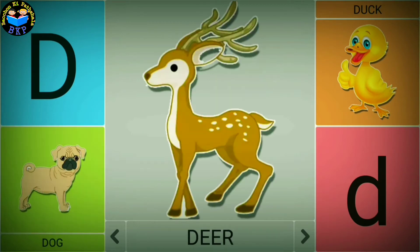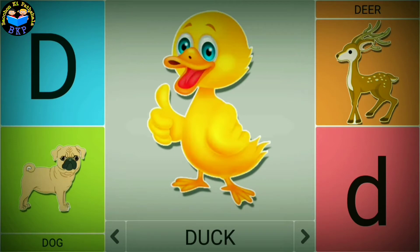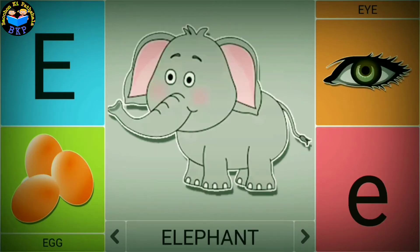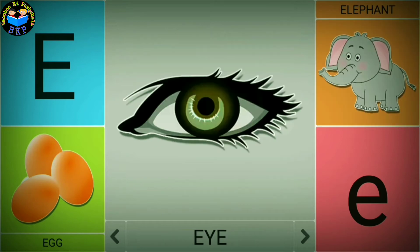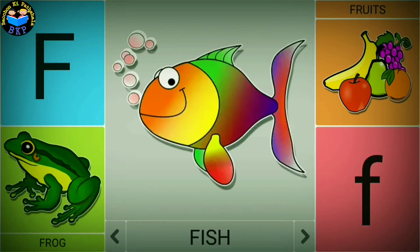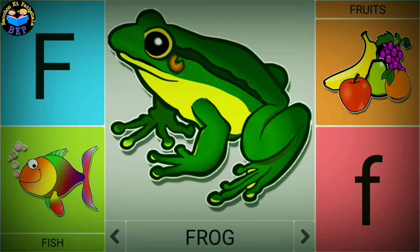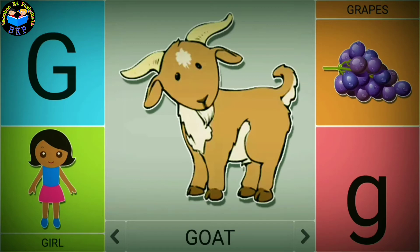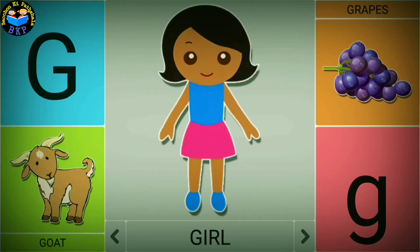D is for deer. D is for duck. E is for egg. E is for elephant. E is for eye. F is for fish. F is for frog. F is for fruits. G is for goat. G is for girl.